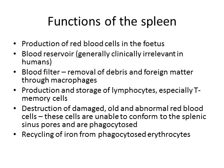The spleen functions as a blood filter, removing debris and foreign matter, especially through the action of macrophages. The spleen produces and stores lymphocytes, especially our T-memory cells. And the spleen destroys damaged, old, and abnormal red blood cells.